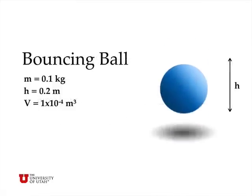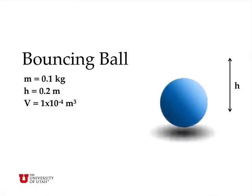Now, let's start by talking about a bouncing ball, and we'll just assume that we have a ball that weighs a tenth of a kilogram. The height of the bounce is 0.2 meters, and the ball has a volume of 1 times 10 to the minus 4 cubic meters, all in SI units.